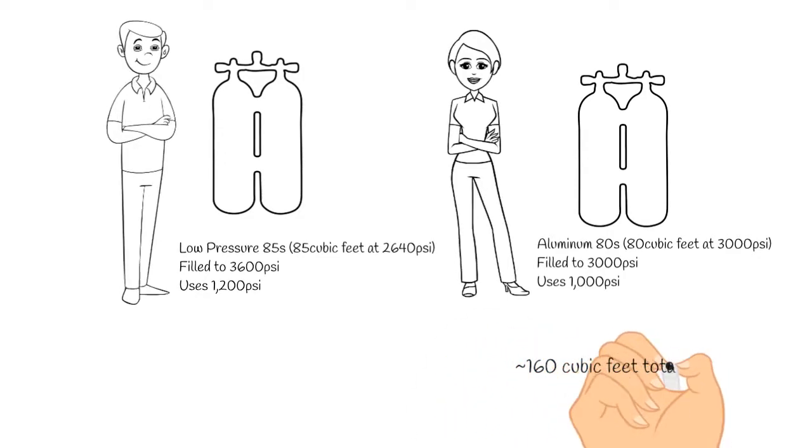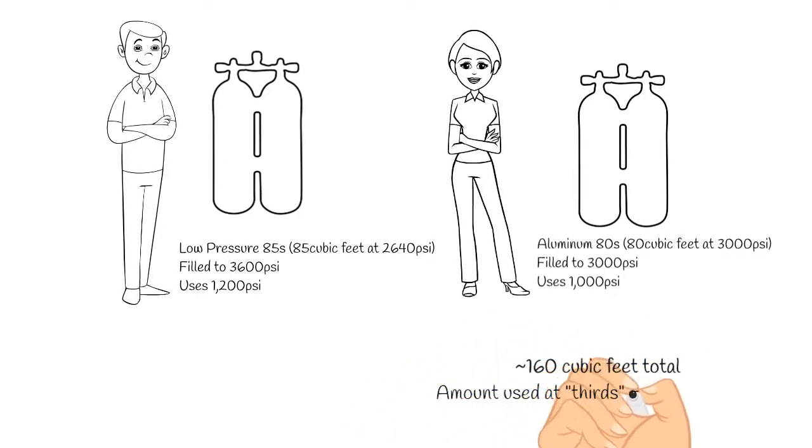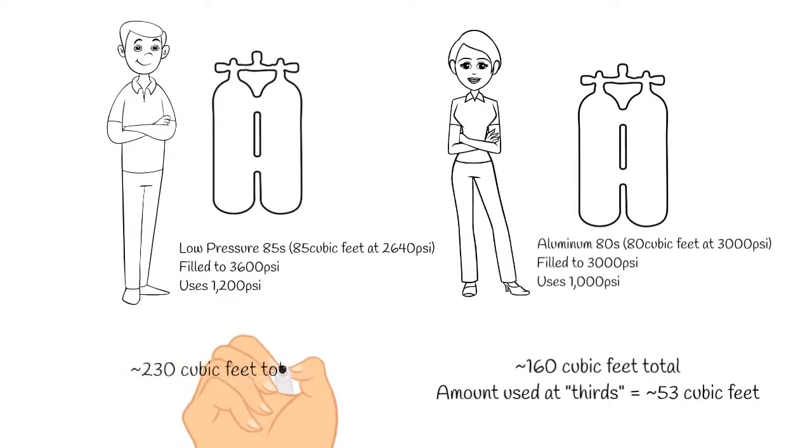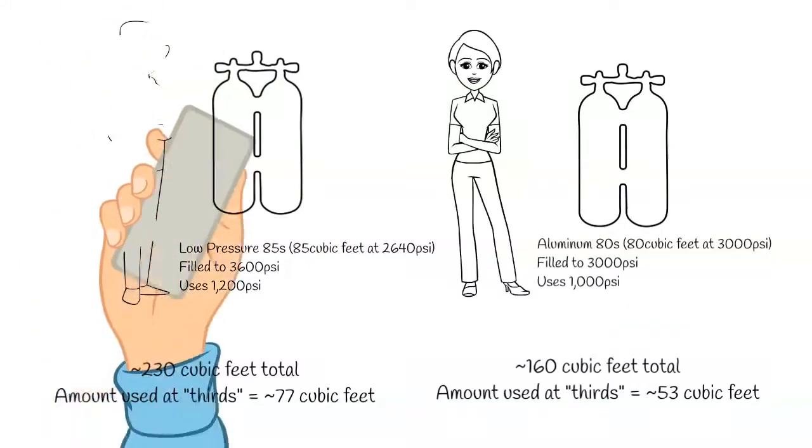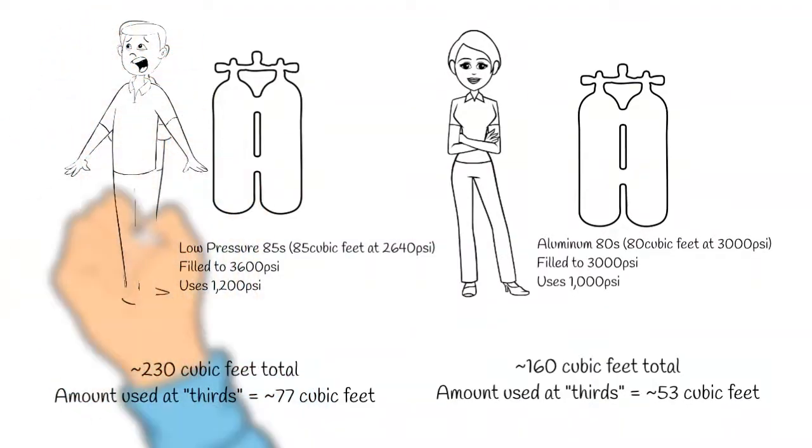For her she's used a thousand psi out of those 80s. For him, he's used 1200 psi out of those 85s. Now since they're different sizes, she's actually used 53 cubic feet of volume once she's turned around, and he has used 77 cubic feet of volume once he's turned around. This is pretty bad planning because if he was to have a catastrophic gas failure, she doesn't have enough gas for both of them to leave the cave.